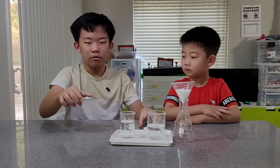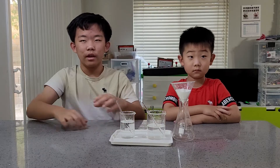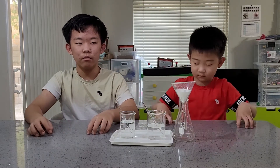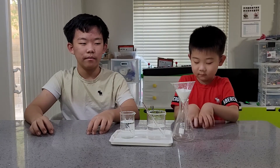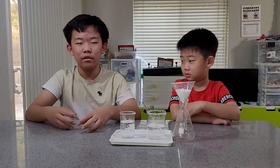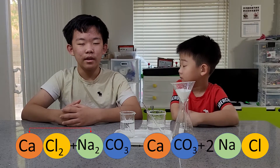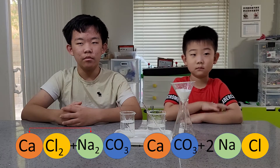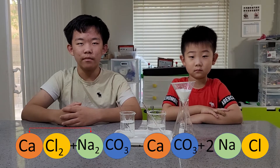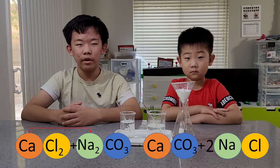Today we're going to be using calcium chloride and sodium carbonate to make calcium carbonate and sodium chloride. Is that limestone and salt? Yeah. Calcium carbonate is limestone and sodium carbonate is salt. The overall chemical reaction is CaCl2 plus Na2CO3 equals CaCO3 plus 2 NaCl.